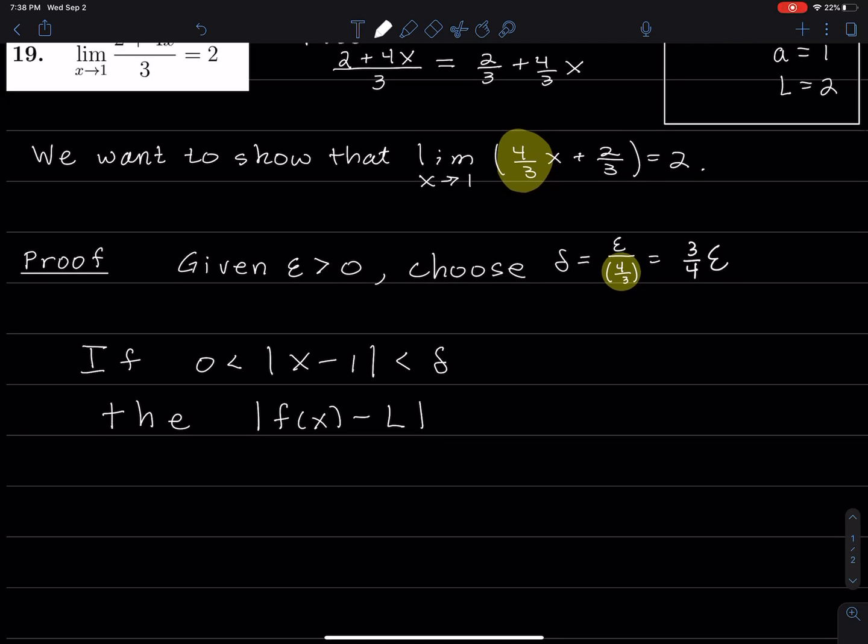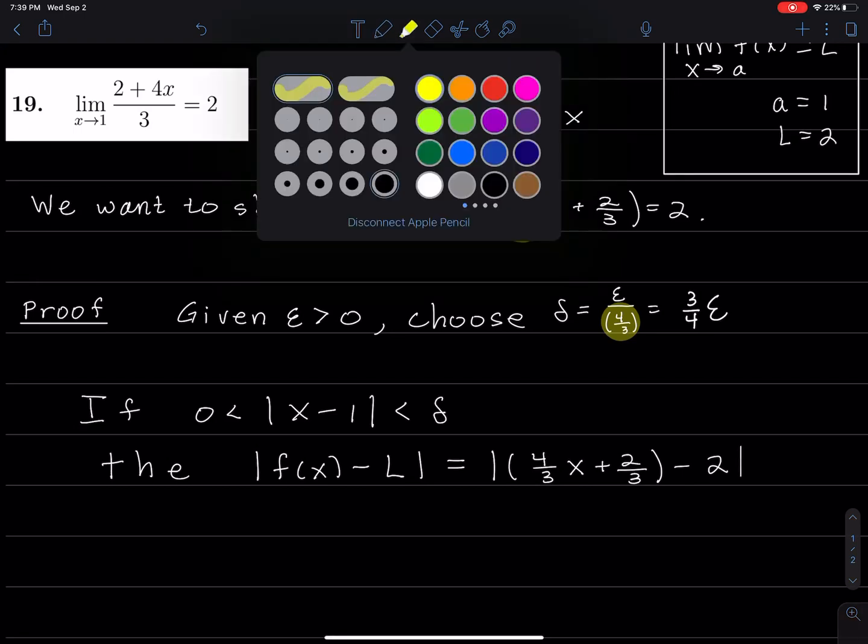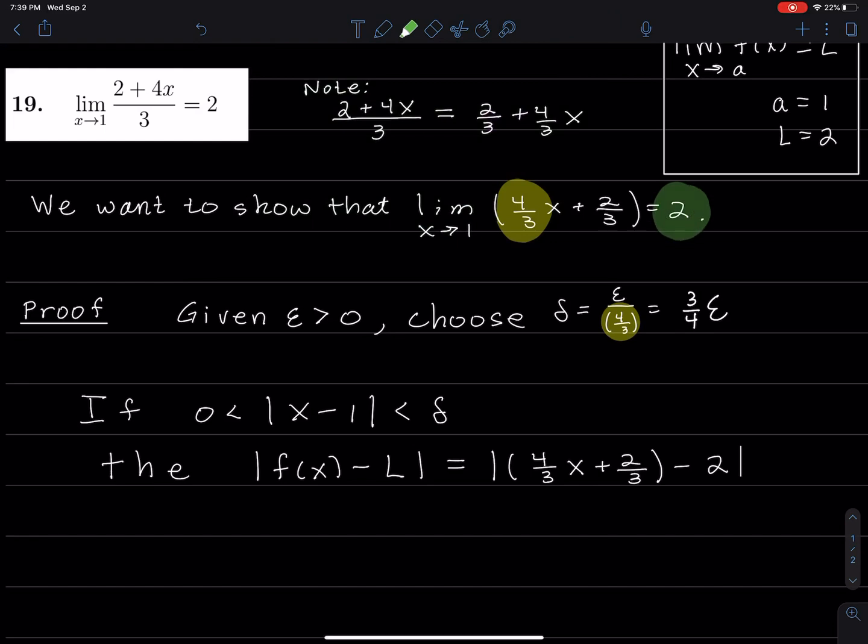So |f(x) - L| is equal to the absolute value of the function, which is (4/3)x + 2/3. So this was my idea that I would rewrite this function. It's good the way it was before, too. But anyway, let's keep going. So then minus, so that's the function minus the limit. The limit is 2. Why am I saying the limit's 2? Because, well, it is. I see the 2 right there. That's why I'm saying L is 2.